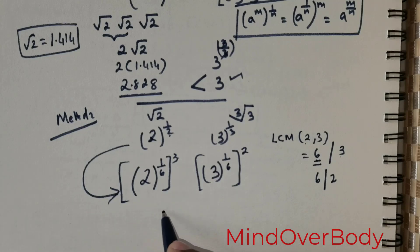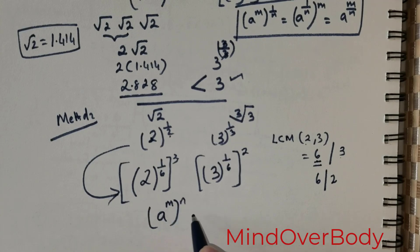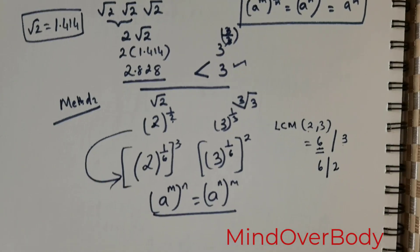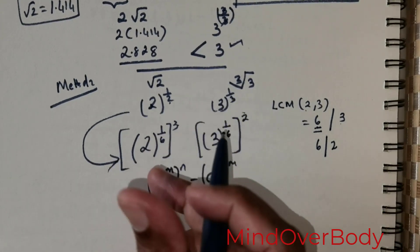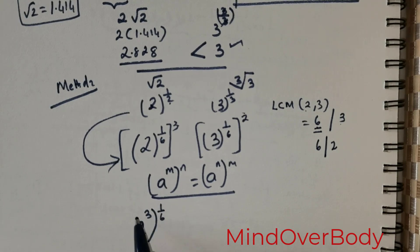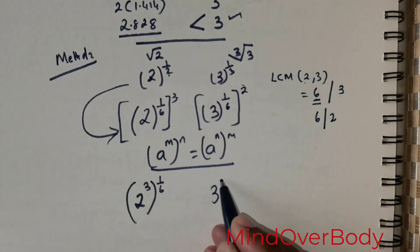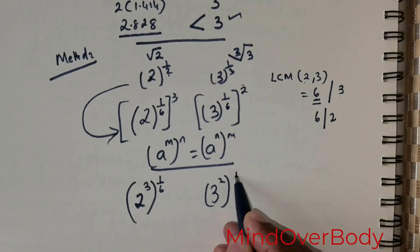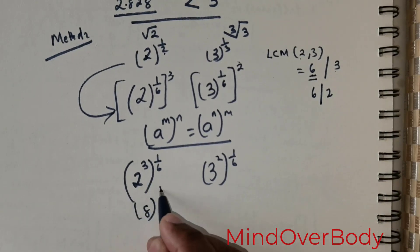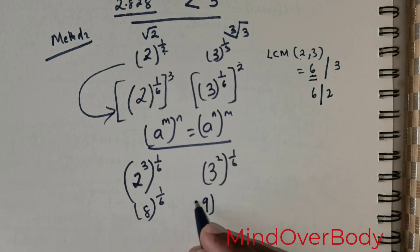Now I am going to use the law of indices. A raised to the power m raised to the power n is rewritten as a raised to the power m, the whole raised to the power n. And by this law I can shift or shuffle the exponents. So it is going to be 2 raised to the power 3 raised to the power 1 over 6, and then for this is going to be 3 raised to the power 2 raised to the power 1 over 6. So now you got common exponent. So 2 raised to the power 3 is 8, that is raised to the power 1 over 6. 3 raised to the power 2 is 9, that raised to the power 1 over 6.